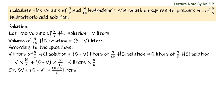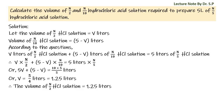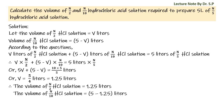Simplifying: 5V + (5 minus V) is equal to 10 × 5/5, giving V equal to 5/4 liters, that is 1.25 liters. Therefore, the volume of N/2 hydrochloric acid solution is 1.25 liters, and the volume of N/10 hydrochloric acid solution is 5 minus 1.25, which equals 3.75 liters.